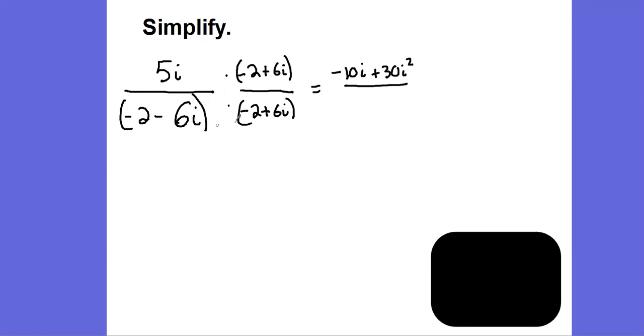Negative 2 minus 6i times negative 2 plus 6i. So this is a binomial times a binomial. We got the foiling thing happening.